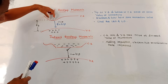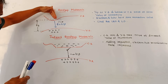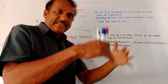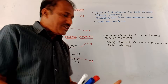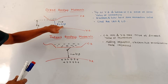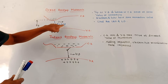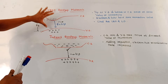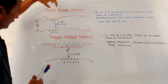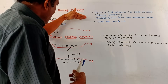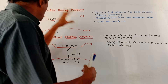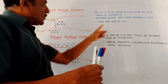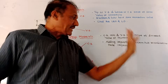When an electron falls from the conduction band to the valence band, it releases a photon — that means it gives out energy. The value of that energy is H nu, where H is Planck's constant and nu is the frequency. So there is a direct transition of the falling electron from conduction band to the valence band. These are the direct bandgap semiconducting materials used for LED and laser diode.